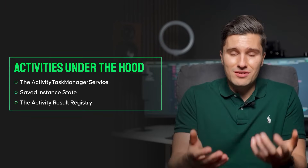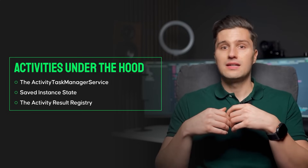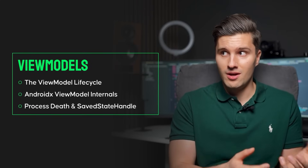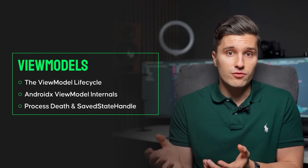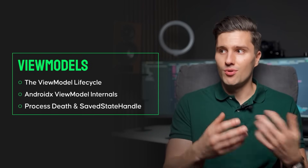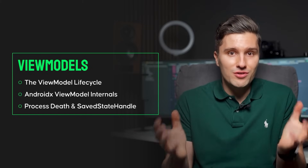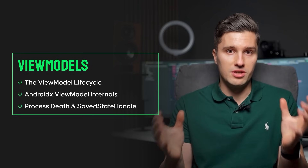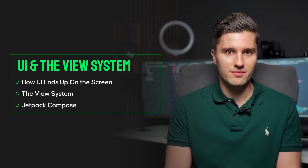In the next section you'll learn how activities actually work under the hood — things like the Activity Task Manager Service, the Activity Result Registry. We'll then dive into ViewModel internals: how ViewModels actually work, how they survive configuration changes, what the ViewModelStore is, what the ViewModelProvider is, process death, saved state handle. We'll actually build our very own ViewModel API, which will help you really understand all these terms in detail.